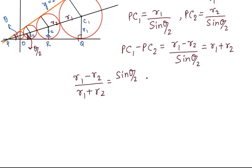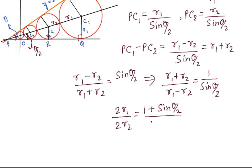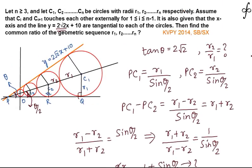Taking the reciprocal: (r1 + r2) / (r1 − r2) = 1 / sin(θ/2). Applying componendo-dividendo, we can write 2r1 / 2r2 = (1 + sin(θ/2)) / (1 − sin(θ/2)), giving us the ratio r1/r2. For this we need the value of sin(θ/2).